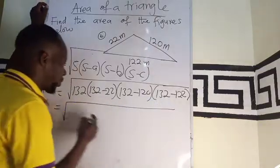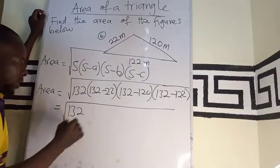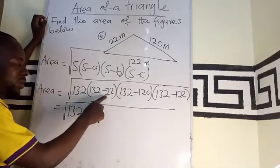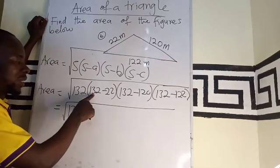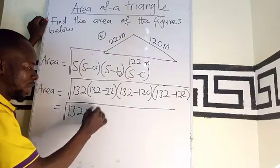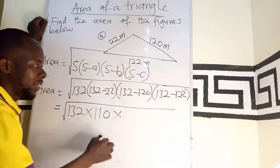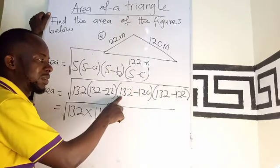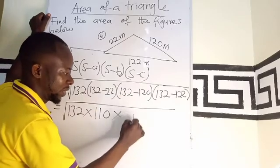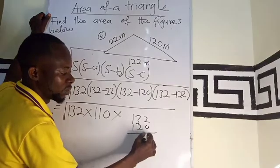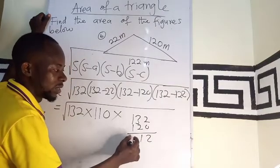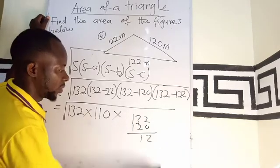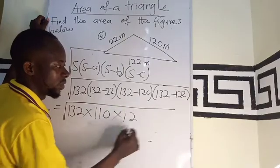The square root will continue. We have 132 in this bracket. We subtract 22 from 132, which gives us 110. Then 132 minus 120 gives us 12.